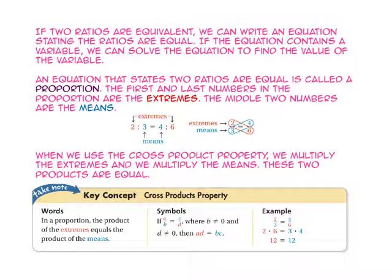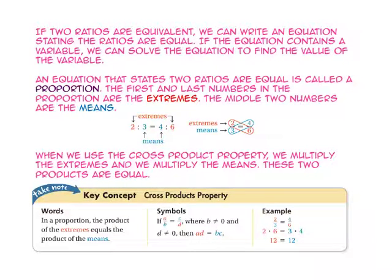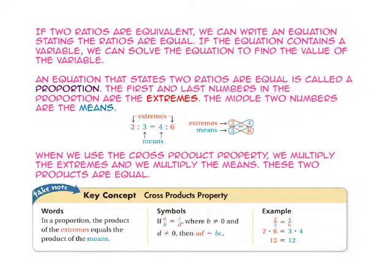If two ratios are equivalent, we can write an equation stating the ratios are equal. If the equation contains a variable, we can solve the equation to find the value of the variable. An equation that states two ratios are equal is called a proportion. The first and last numbers are the extremes, and the middle two numbers are the means. When we use the cross product property, we multiply the extremes and we multiply the means, and these two products are equal. So if the ratio 2 to 3 equals 4 to 6, then 2 times 6 equals 12, which equals 3 times 4, also 12.